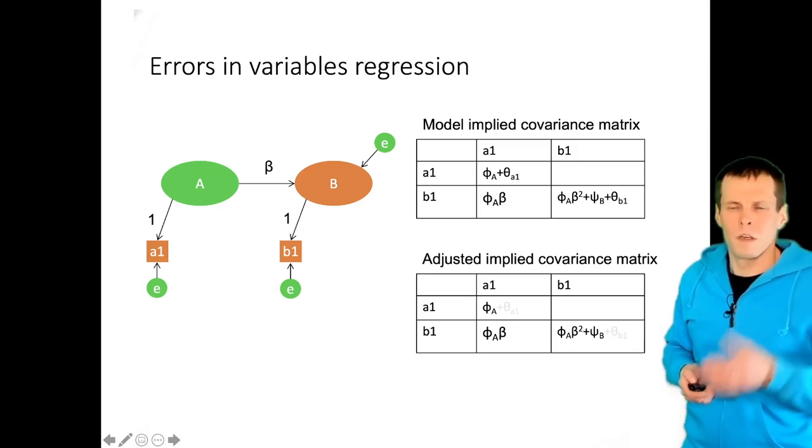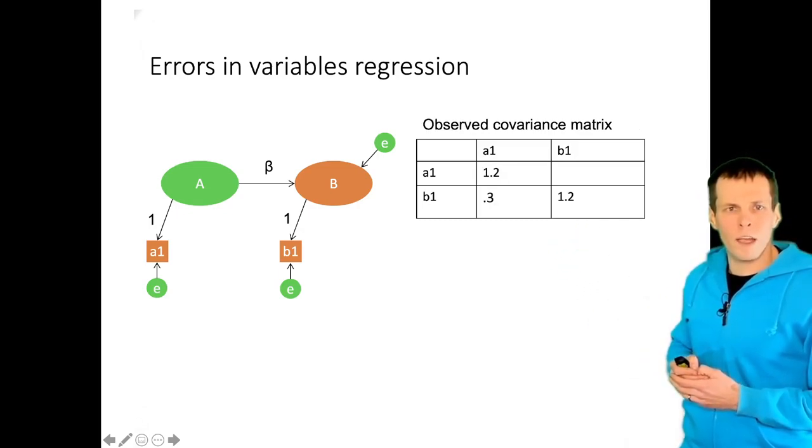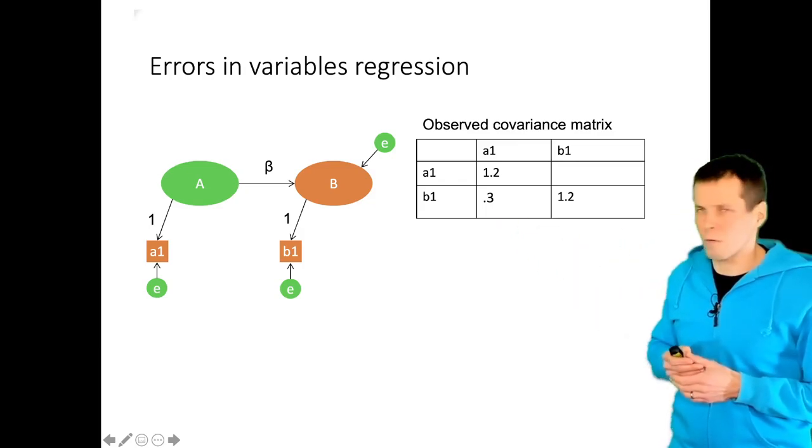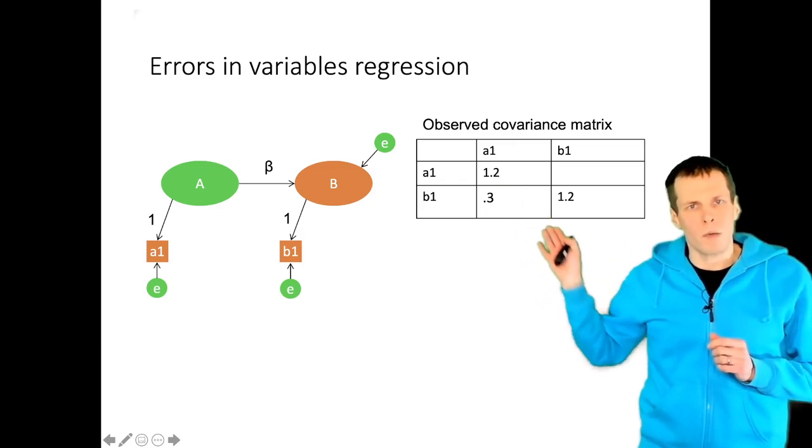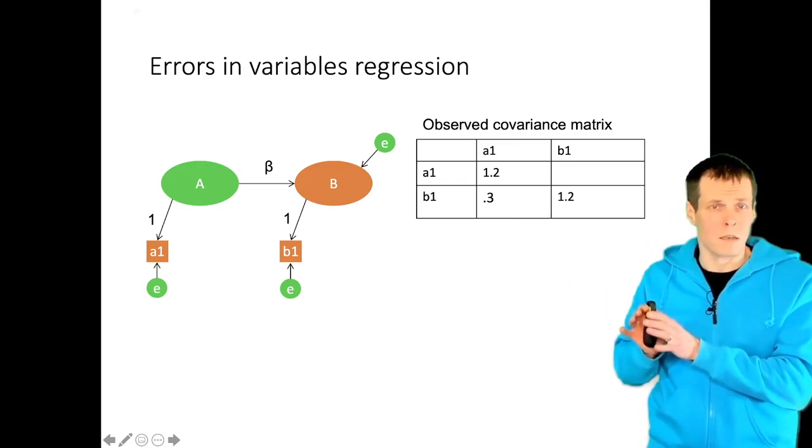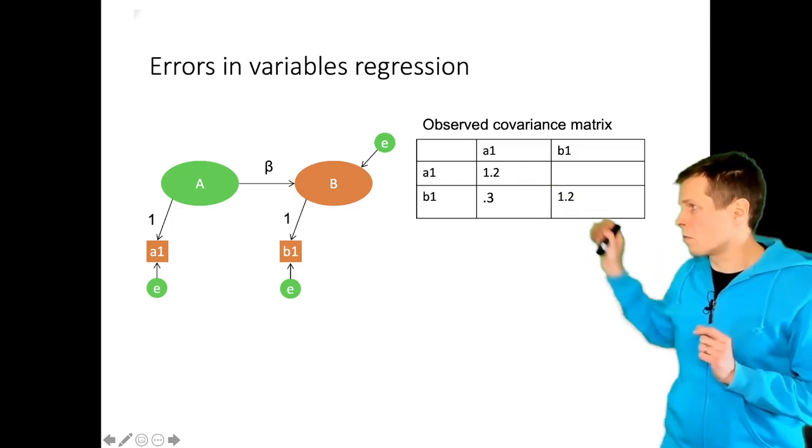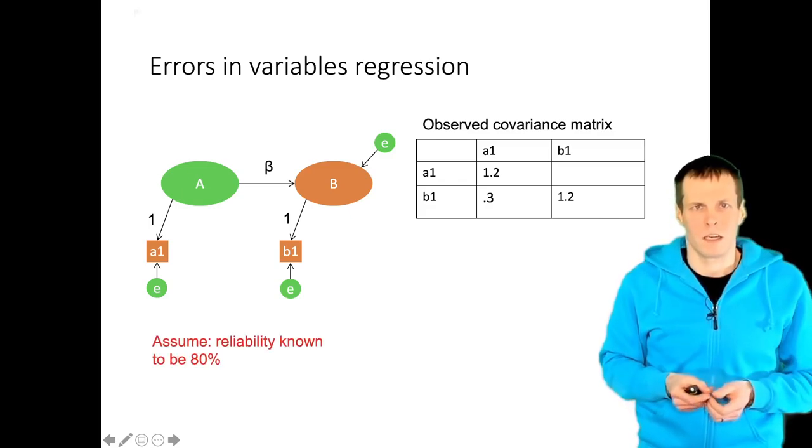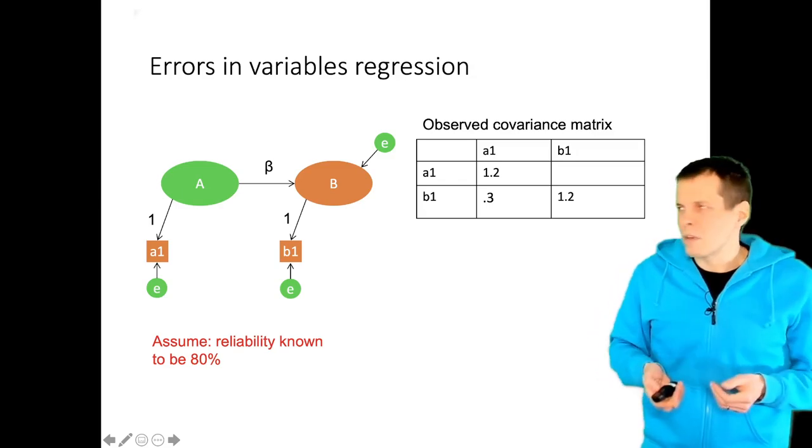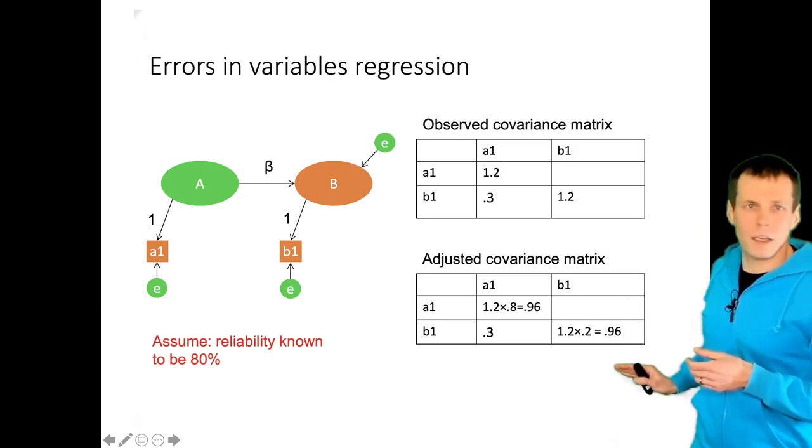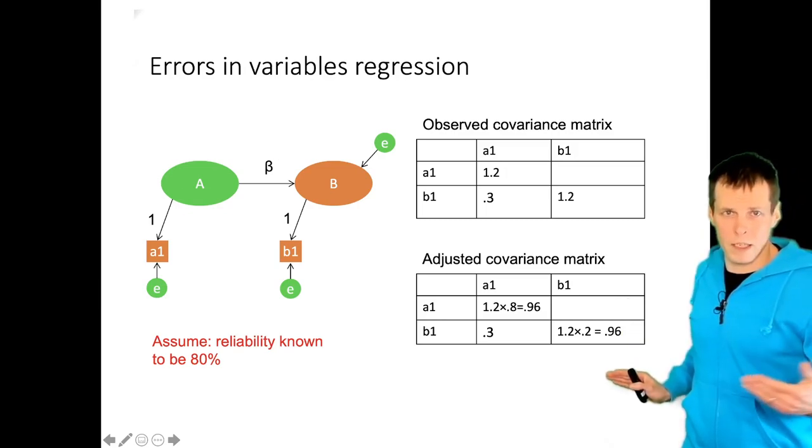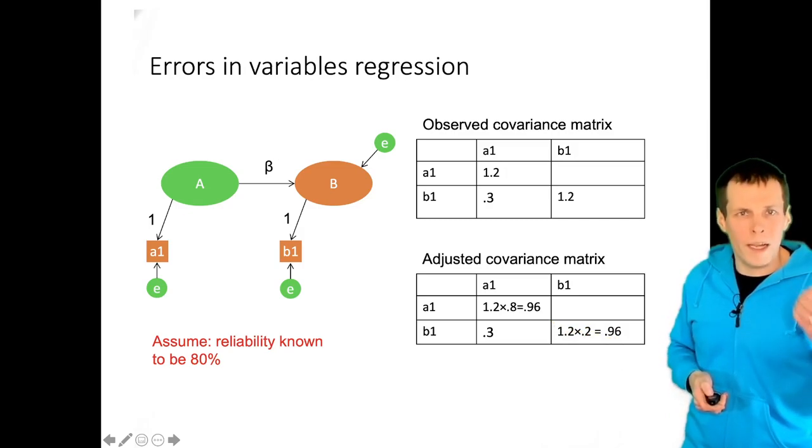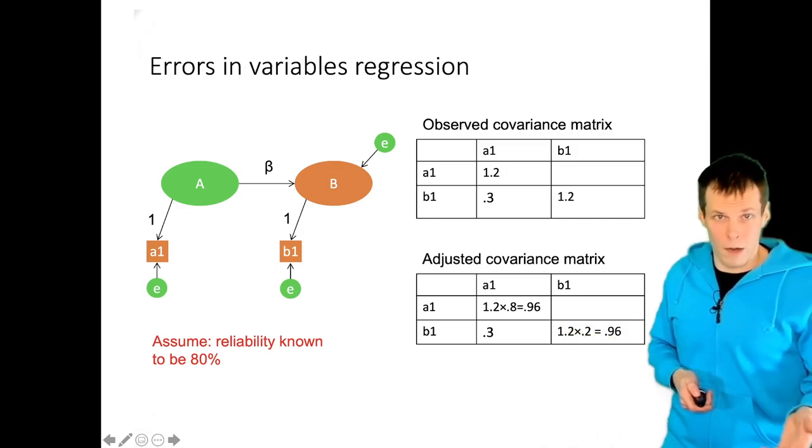How does that work in practice? Let's assume that we observe this covariance matrix here. The variance of A1 is 1.2, the variance of B1 is 1.2, and the covariance is 0.3. Now the unreliability of A1 and B1 under the classical errors in variables assumptions affects only this diagonal here. Now let's say that we know or assume that the reliability of these indicators is 80%. What we then do is that we adjust the covariance matrix by multiplying the diagonal elements by the known or estimated reliabilities. So this variance becomes 0.96 and this variance becomes 0.96 and then we estimate a regression model using this error-adjusted covariance matrix.